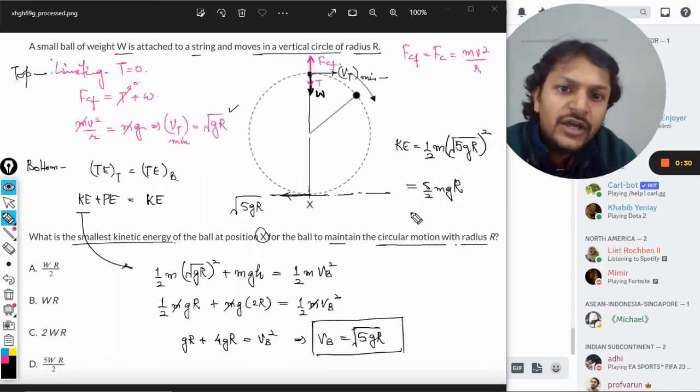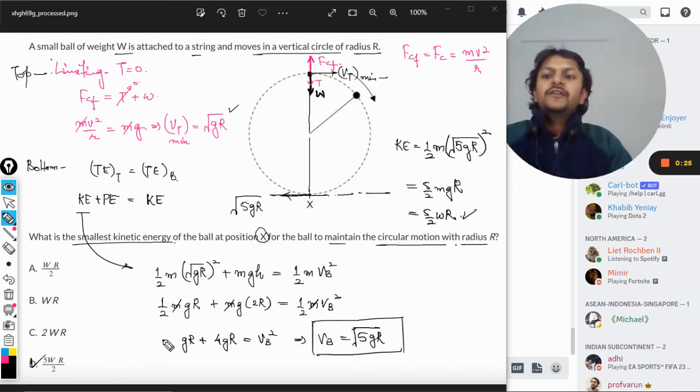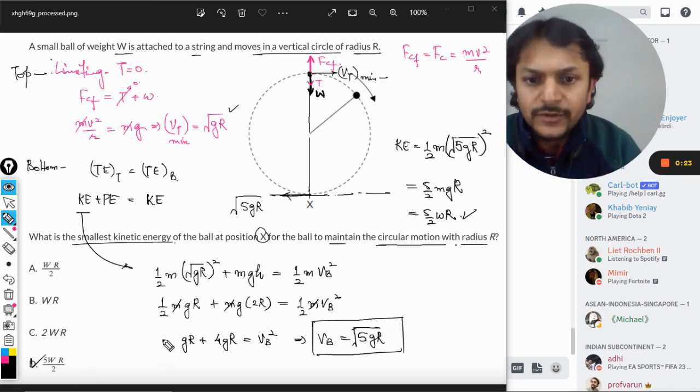mg can be taken as W and thereby we get D as the answer.